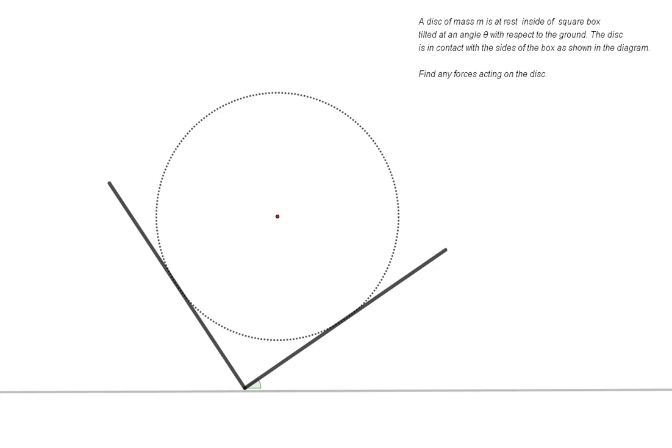A disk of mass M is at rest inside of a square box tilted at an angle theta with respect to the ground. The disk is in contact with two sides of the box as shown in the diagram. Find any forces acting on the disk.